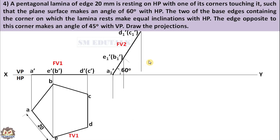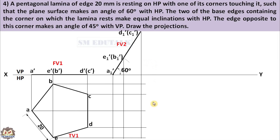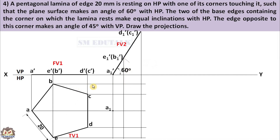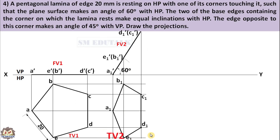To draw the top view in stage 2, project the endpoints of stage 2's front view downwards and project the corner points of stage 1's top view to the right. The vertical and horizontal projection lines intersect to create five points: A1, B1, C1, D1, and E1. Join these five points by a thick line to get the top view in stage 2. This pentagon is smaller than the previous one and is called the apparent shape.